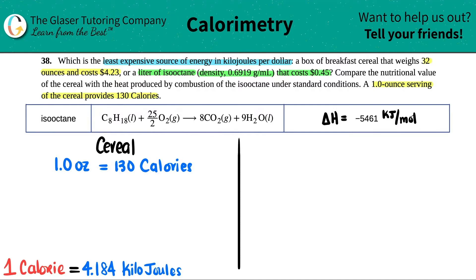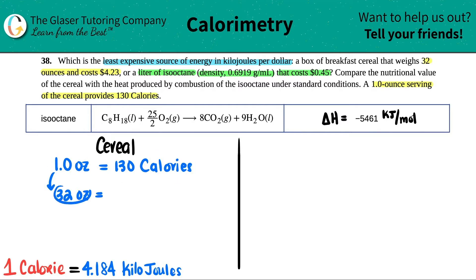Now we want to find out how many calories are in 32 ounces. Since one ounce equals 130 Calories, we multiply by 32: 130 times 32 gives us 4,160 Calories total for the whole box.